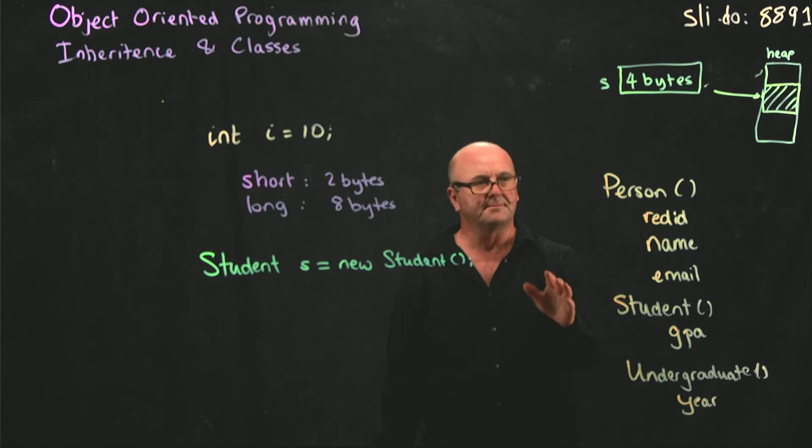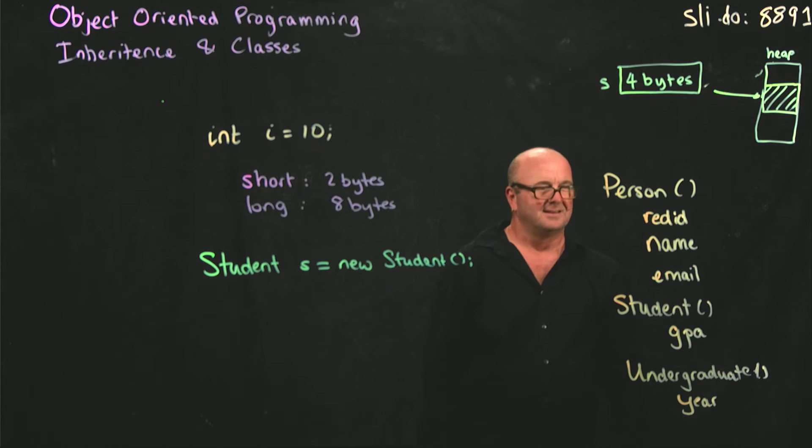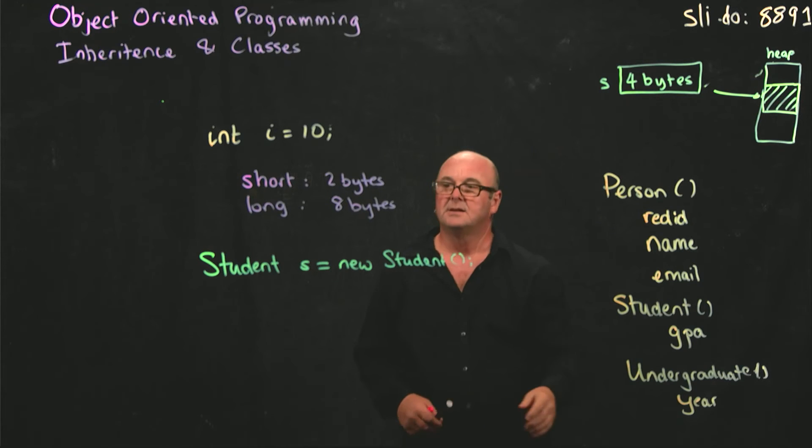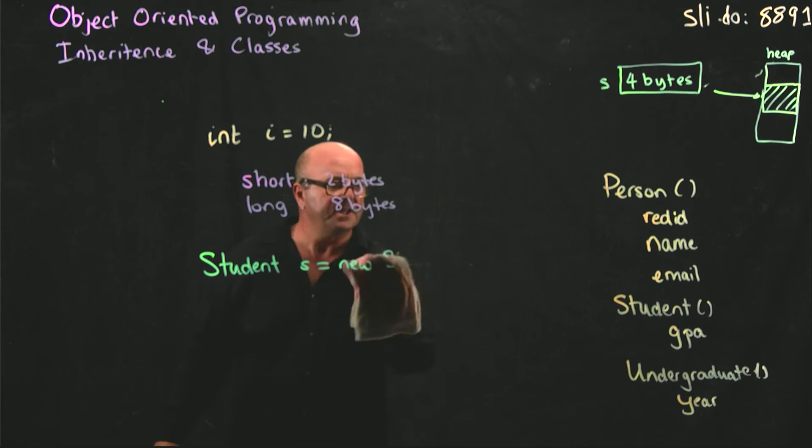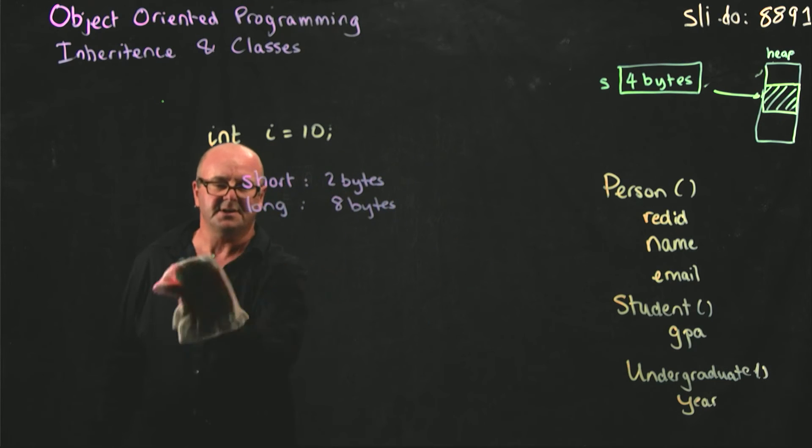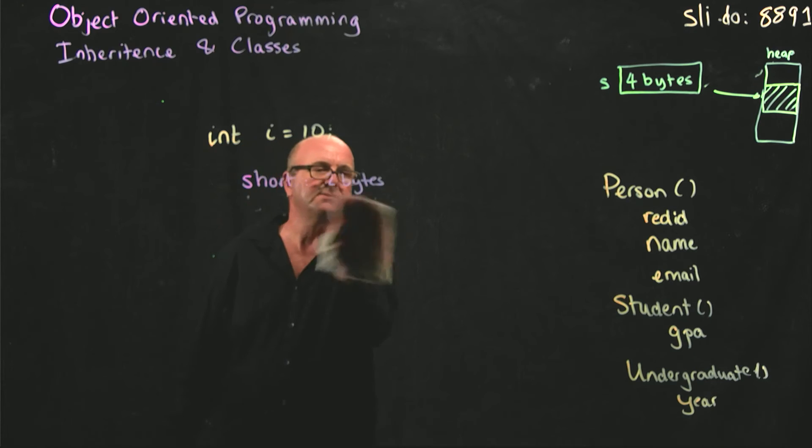Undergraduates are students. If students are people and undergraduates are students, then undergraduates are also people. So I have an inheritance here where everything in undergraduate comes from student and everything in student comes from person.